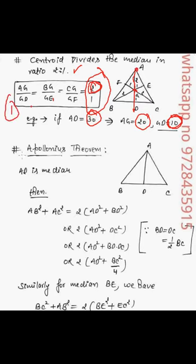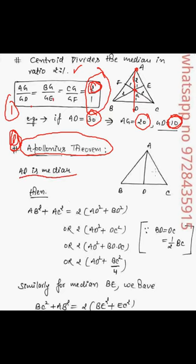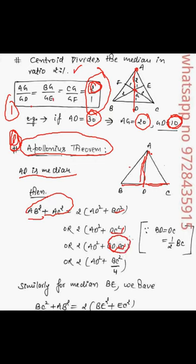The second very important property is Apollonius' theorem, especially targeted for exams. It can be applied to any one median. For example, if AD is the median, the theorem states: AB² + AC² = 2(AD² + BD²). The adjacent sides squared sum equals 2 times the median squared plus the half-side squared. Since BD = DC, you can also write BD·DC or (BC/2)².